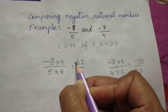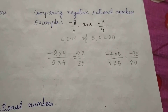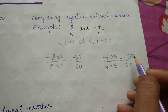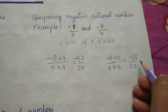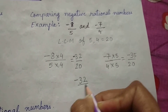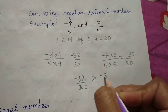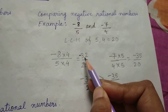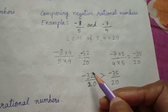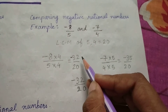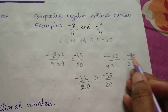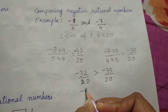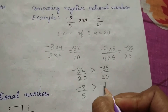For negative rational numbers, we apply the integer comparison method. We know that minus 35 is less than minus 32, because the number with a bigger value in a negative integer is actually smaller. So minus 32 is greater than minus 35. Therefore, minus 32 by 20 is greater than minus 35 by 20, which means the original number minus 8 by 5 is greater than minus 7 by 4.